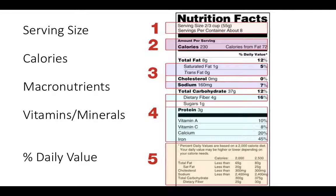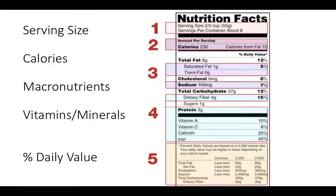You'll also find the calories, different required nutrients, vitamins and minerals, and then the percent daily value. The percent daily value is based off of the RDAs, which tell you how much vitamin A, vitamin C, calcium, or iron you're required to have within one day.